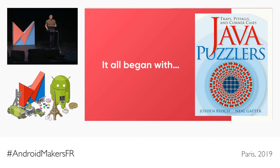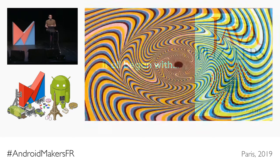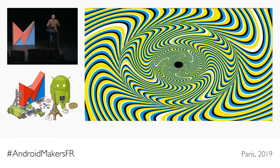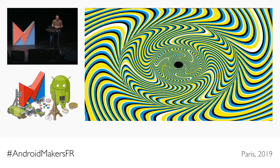So what's a Puzzler? If we had to visualize a Puzzler, that would be the visual representation. Normally when you look at this picture, I get the impression that everything is moving. But that's only your mind tricking you — it's not moving at all. It's a static image. And this is what we're going to do in this talk.